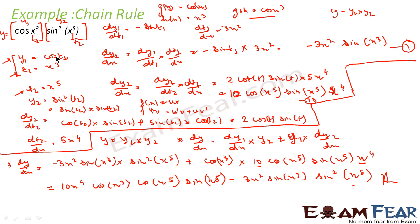So what we have done: this was a tricky question because it involved a lot of concepts. This y was composed of two functions obeying the product rule: y = y1 · y2. We found dy1/dx by identifying y1 = cos(x³) as a composite function and applying the chain rule. Similarly, y2 = sin²(x⁵) was a composite function involving chain rule. Once we had dy1/dx and dy2/dx, we applied the product rule to get the final answer.